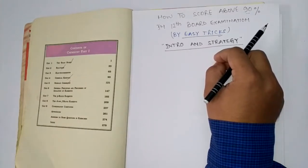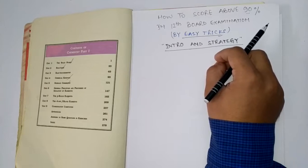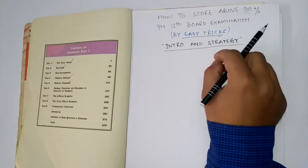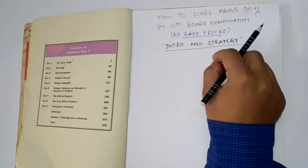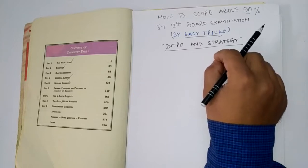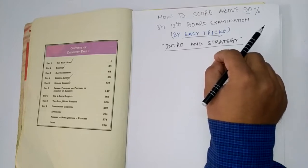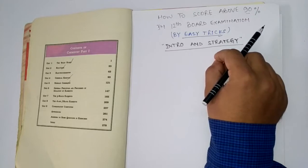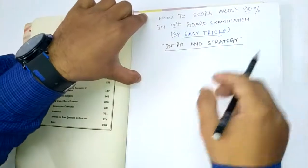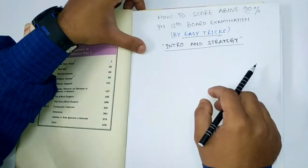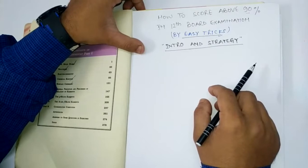These videos will help students who are in a hurry and thinking they are not going to score above 60% or 70%. Just follow all these videos — every day we are going to publish around three videos from each subject: physics, chemistry, and math. We are also going to tell you what the strategy of your examination should be. This is the very first intro portion of my channel.